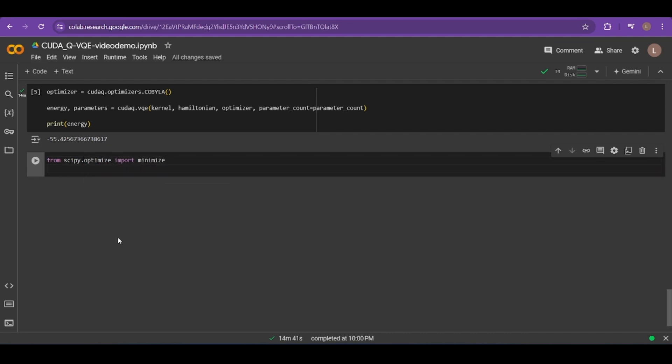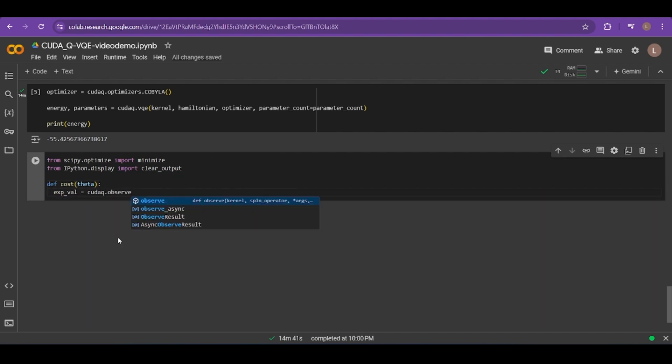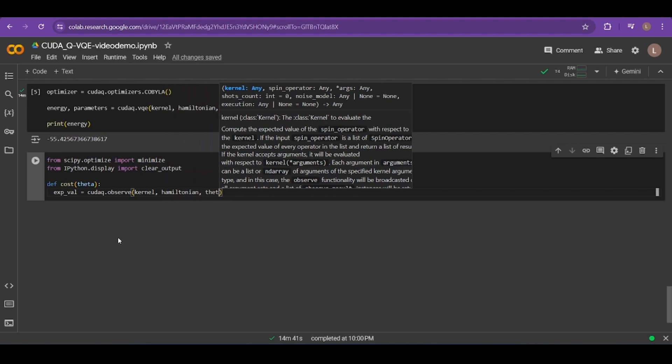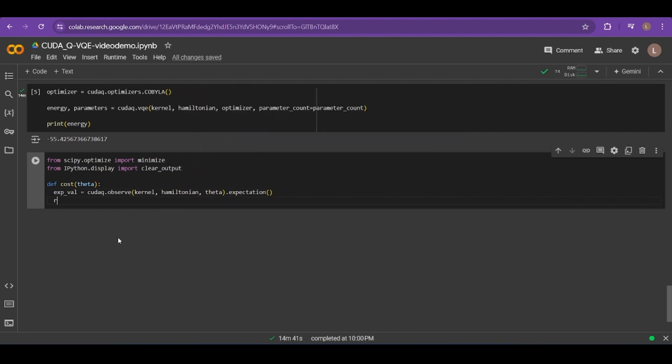To watch the simulation progress, we need to write our own minimizer. To do this, we need three functions. First, a cost function. This basically returns the energy that we measure in our quantum computer from the kernel function that we defined above. The goal of our VQE will be to minimize this cost function, meaning make it as low as possible. Usually, this is a negative number, so the more negative the better, because this indicates a lower energy confirmation which is more stable.